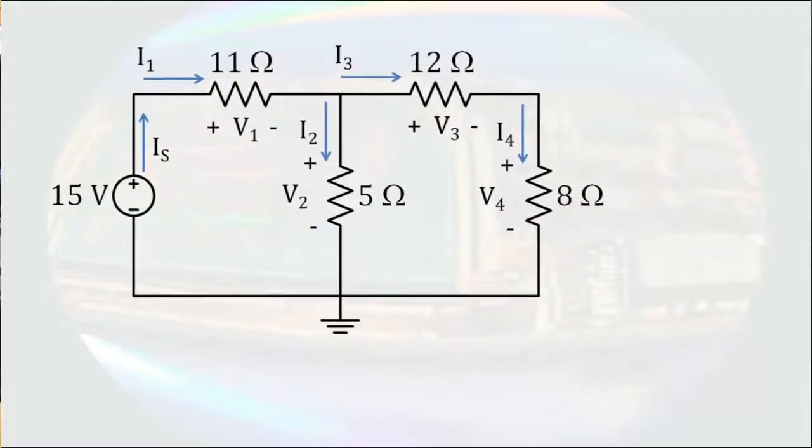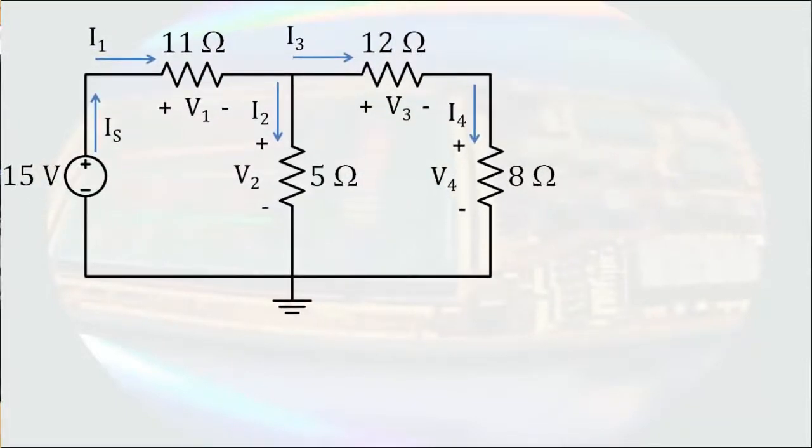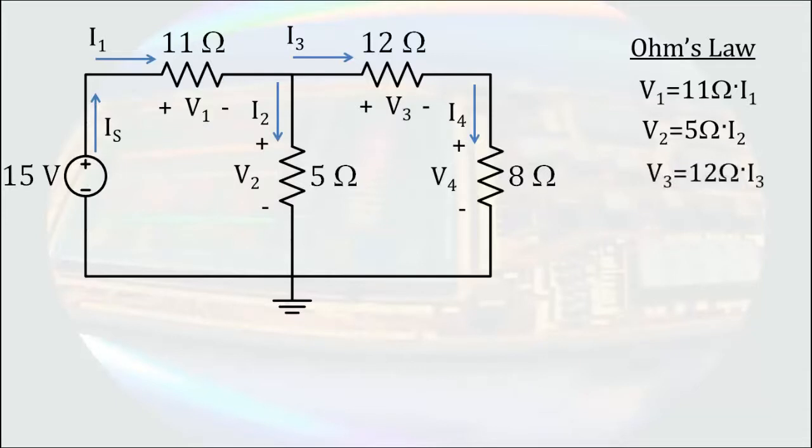We'll begin by writing the Ohm's law relationships for the resistors. So, we write V1 equals 11 ohms times I1, V2 equals 5 ohms times I2, V3 equals 12 ohms times I3, and V4 equals 8 ohms times I4.